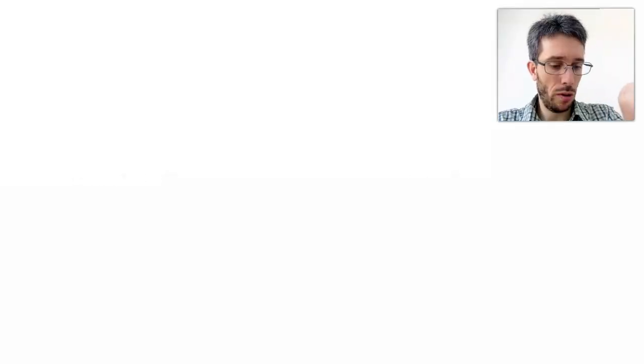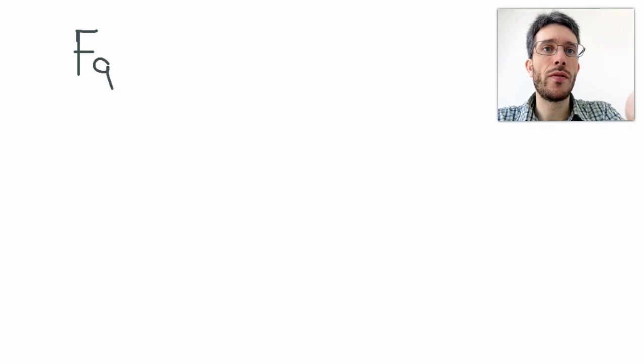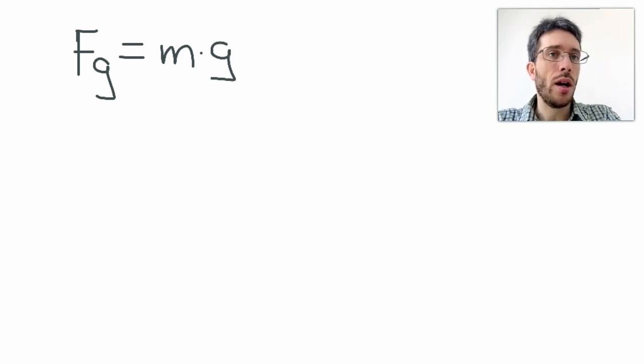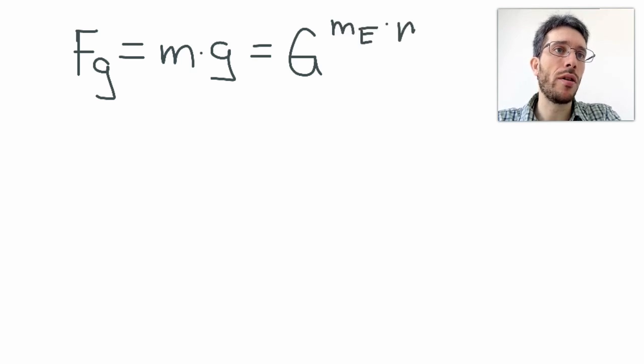We can calculate it. We know that close to the surface of the planet, the force of gravity, Fg, is equal to mass of an object times gravitational constant g. And we know that there's also the universal law of gravity. This is equal to G times mass of the big object, in this case the Earth, times the mass of the object over the radius, in this case of the Earth if we're standing on the surface of the planet, squared.